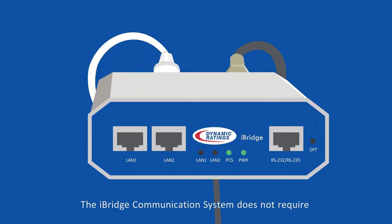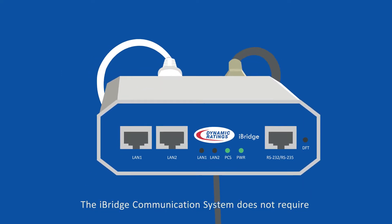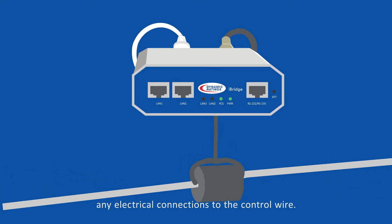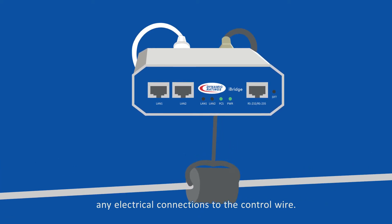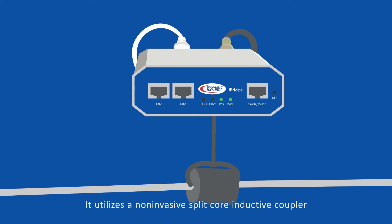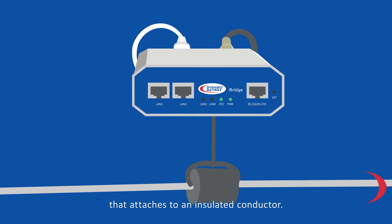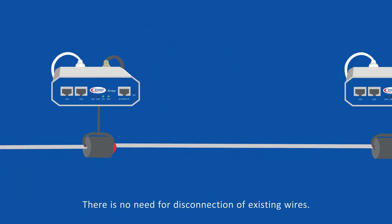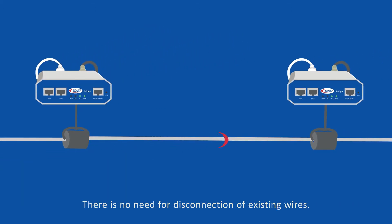Here is how it works. The iBridge communication system does not require any electrical connections to the control wire. It utilizes a non-invasive split-core inductive coupler that attaches to an insulated conductor. There is no need for disconnection of existing wires.